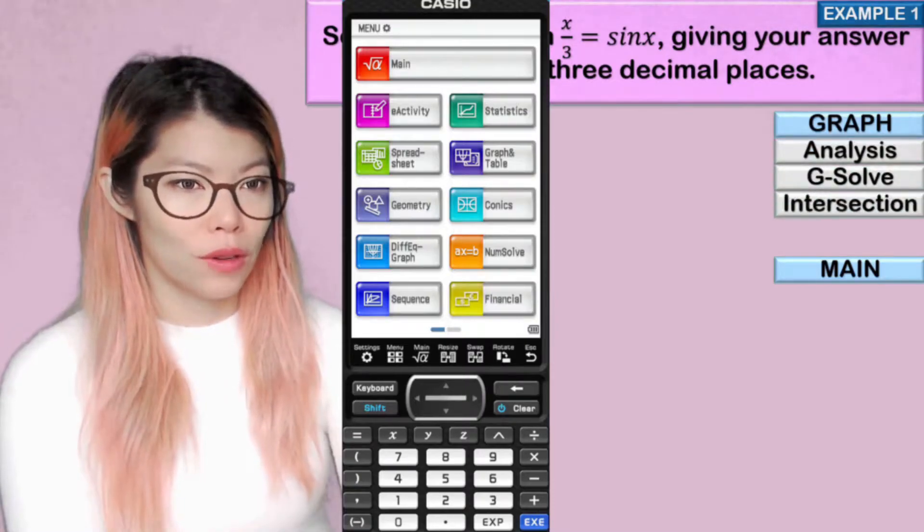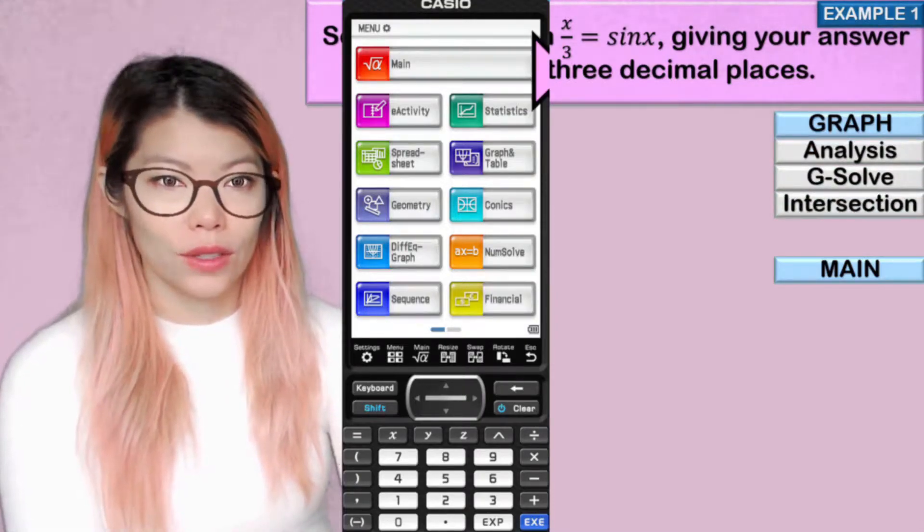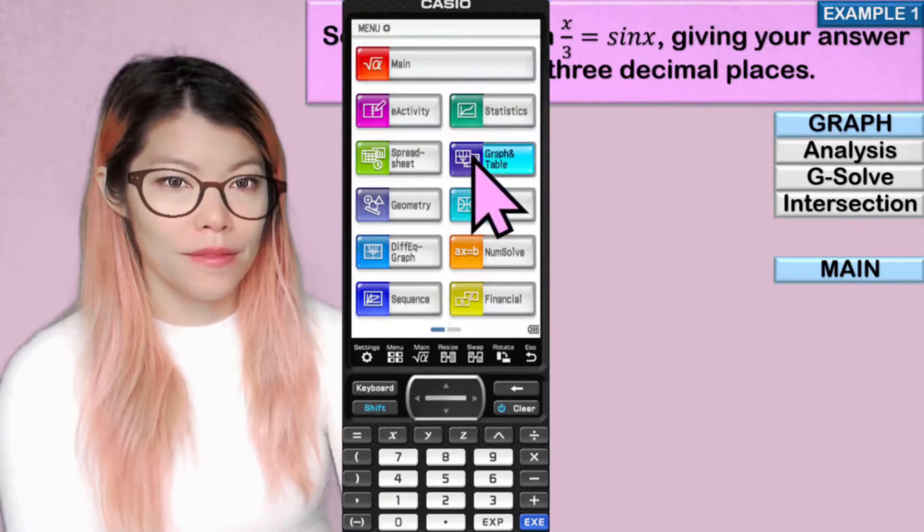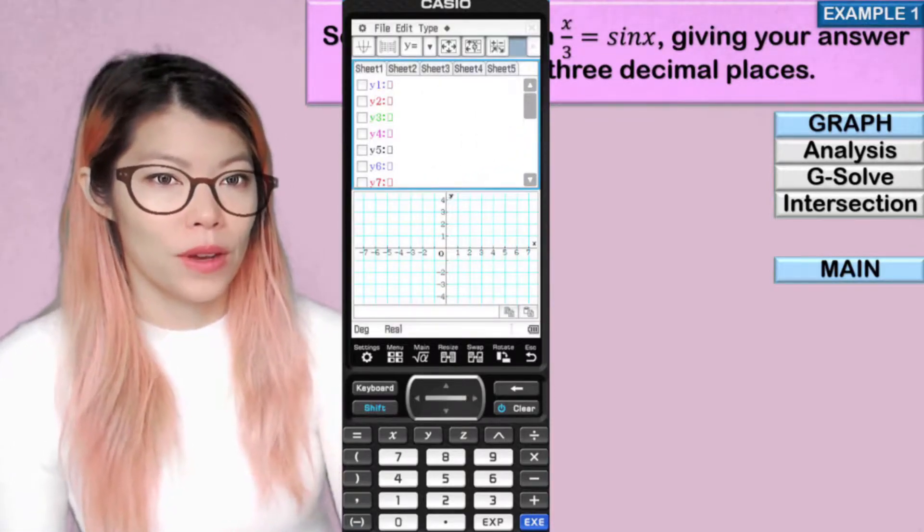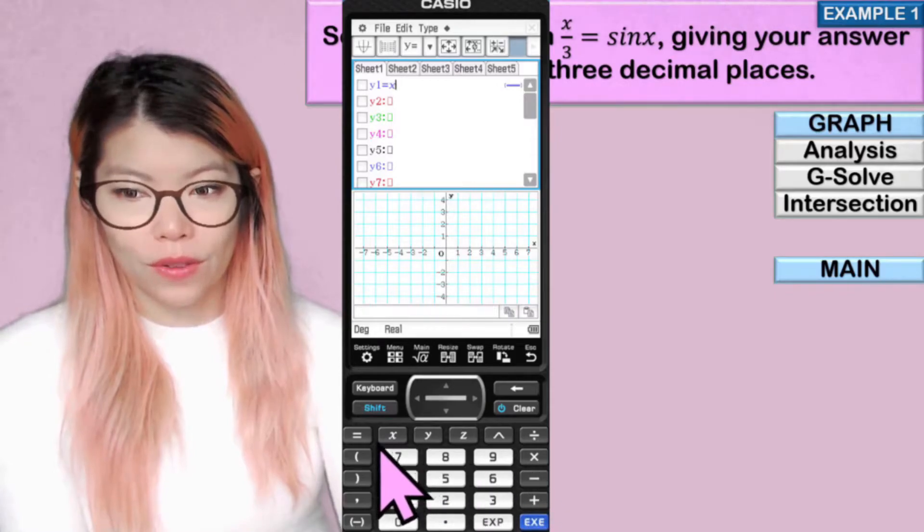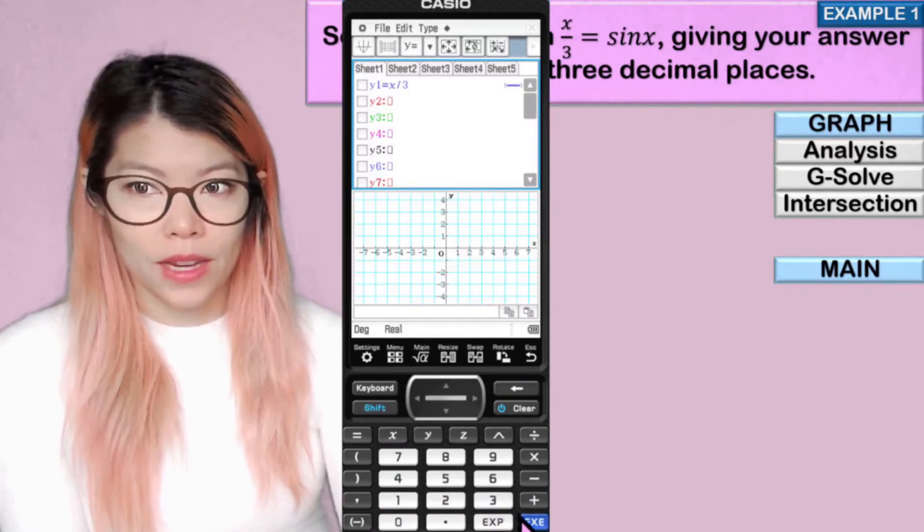So for graph, we have to use the following buttons. So let's go to graph. Let's type in our first equation, which is x over 3, so divide it by 3, enter.